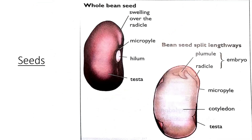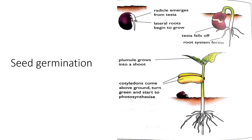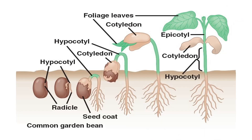After fertilization, the ovule develops into a fruit with one or more seeds inside. Germination means the seed splits and starts to grow into a plant. First the roots emerge: the radicle emerges from the testa, lateral roots begin to grow, the testa falls off, and the root system develops. Then the plumule grows into a shoot. The cotyledon comes above ground, turns green, and starts to perform photosynthesis.